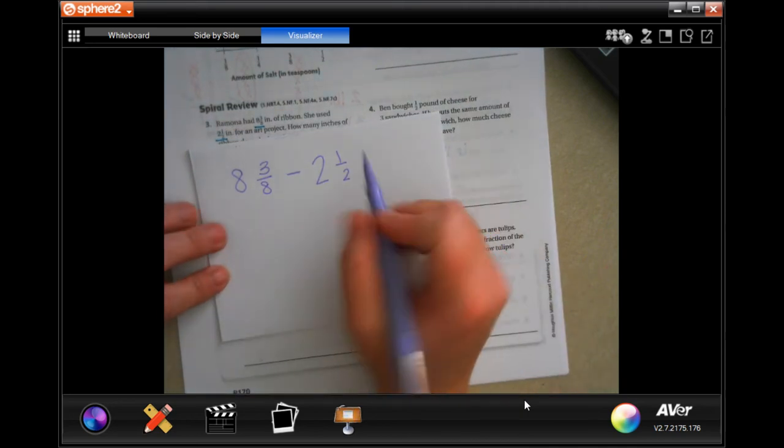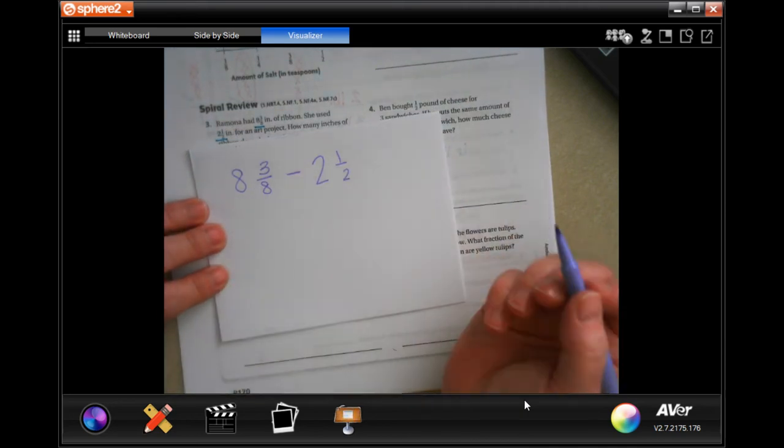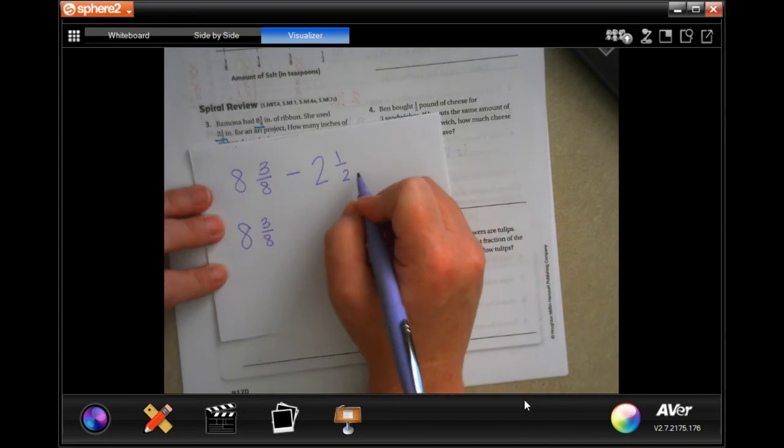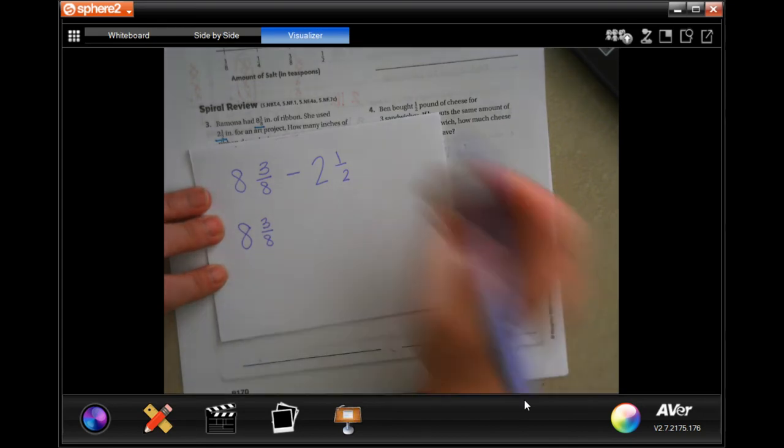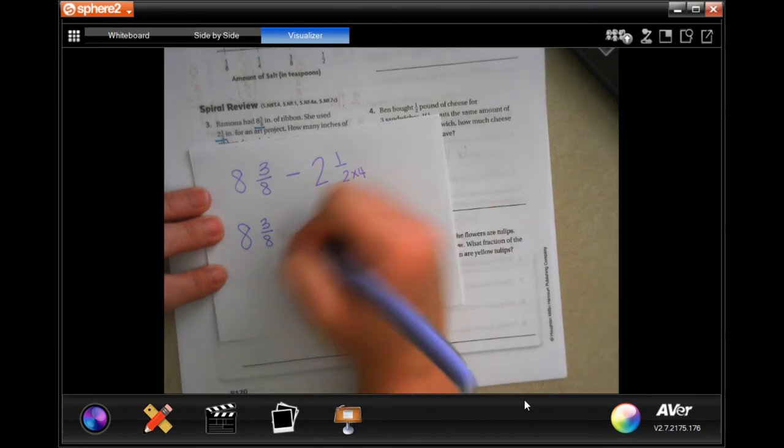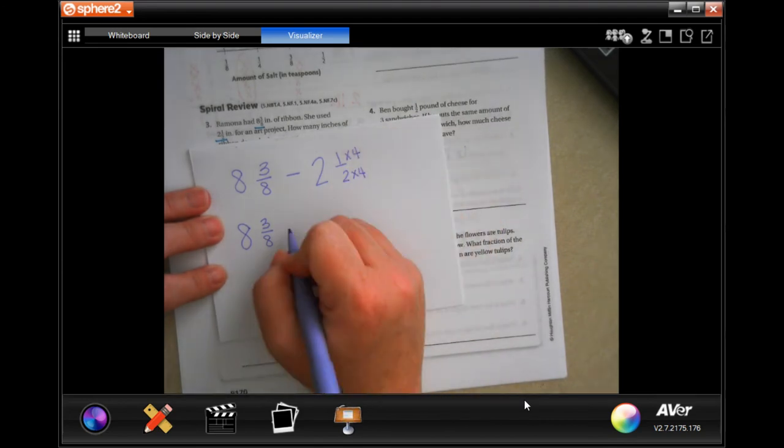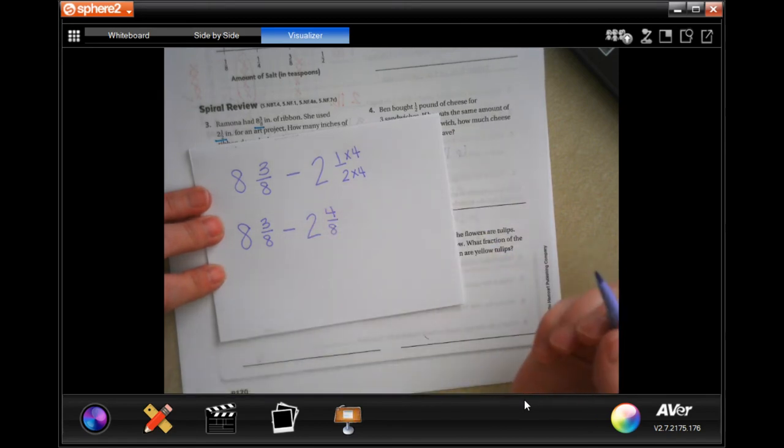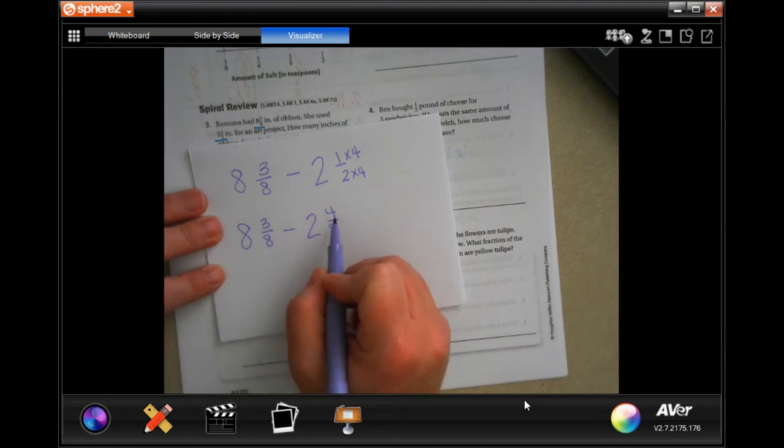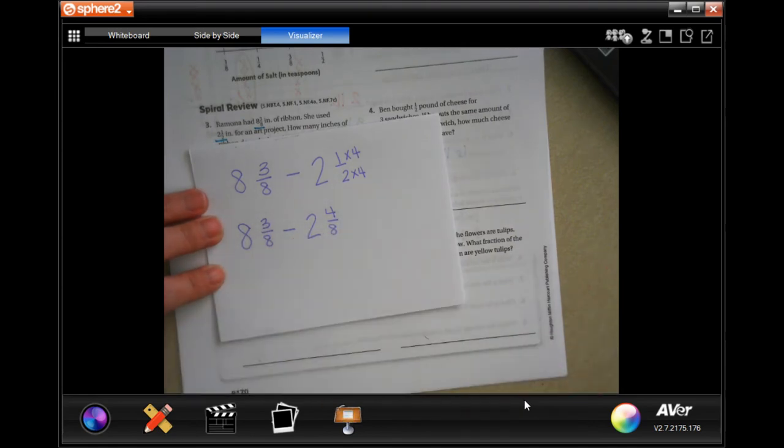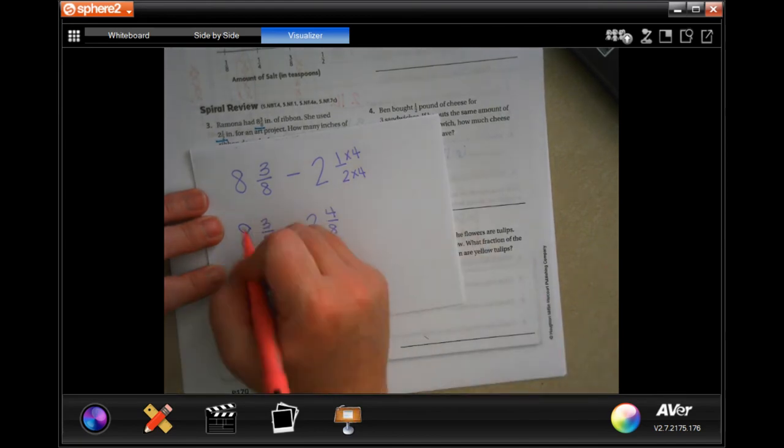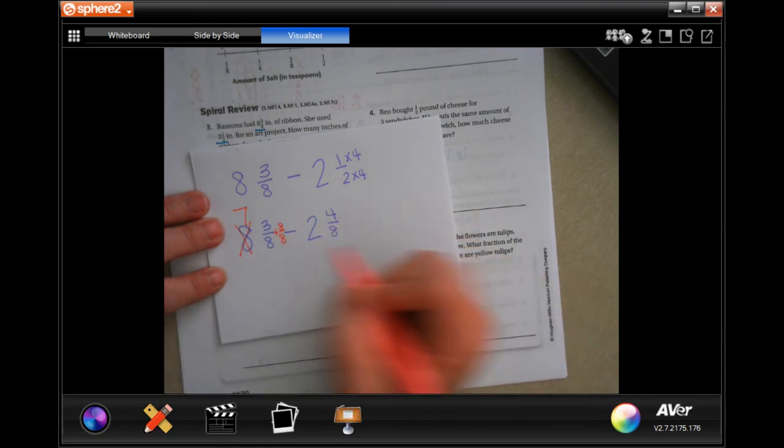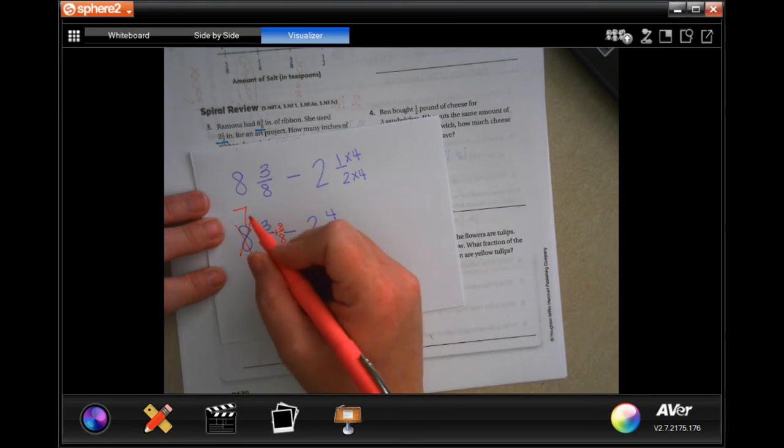We're going to find a common denominator. A common denominator between two and eight is going to be eight. We are going to have eight and three eighths because this is already eight. And then our two and a half, I had to multiply the bottom by four to get to eight. So now I need to multiply the top by four, and I'm going to get four eighths. Now you can see that three can't take away four. So I need to borrow one, making that a seven. I'm going to add an eight over eight because eight over eight is equal to the one that I borrowed.